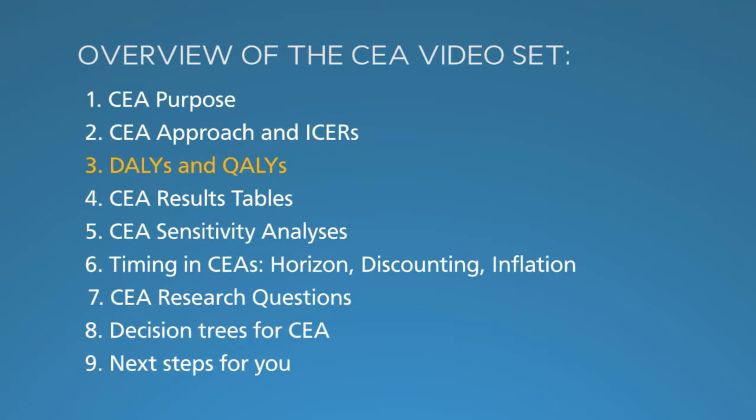In segments number one and two, you learned why to do CEAs and how to compare net costs to health outcomes, especially disability-adjusted life years, or DALYs, and quality-adjusted life years, or QALYs. In this segment, number three, we dive deep into DALYs to understand how they're calculated and used. We also consider their close cousins, the QALYs.